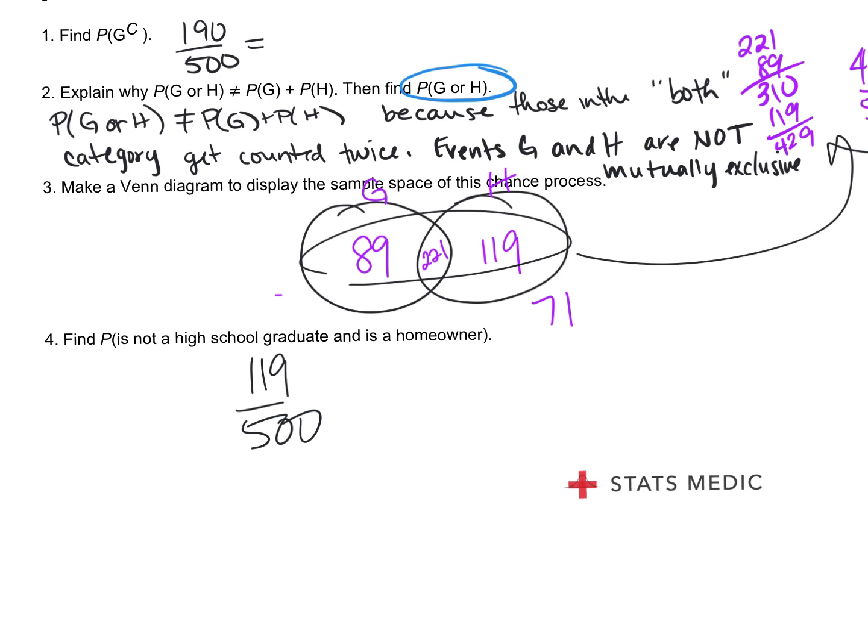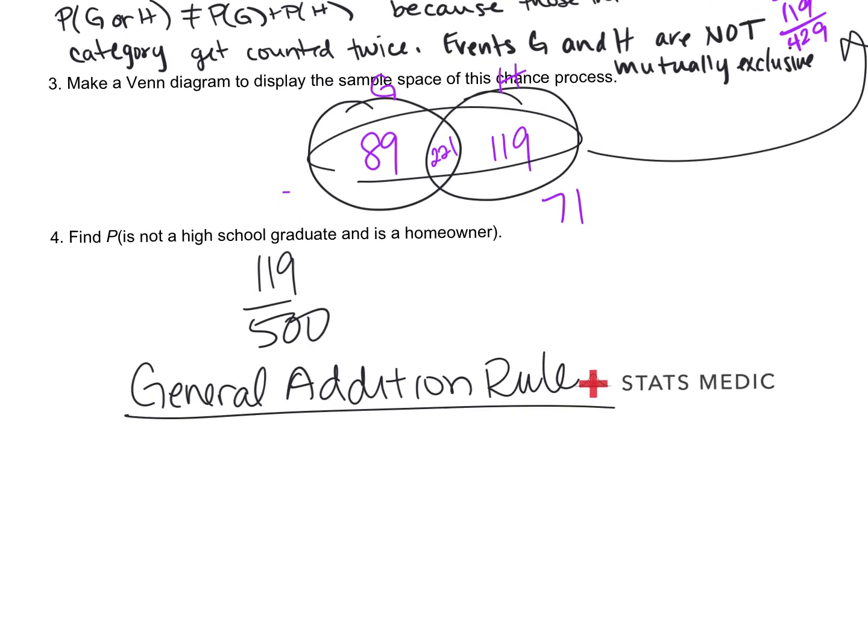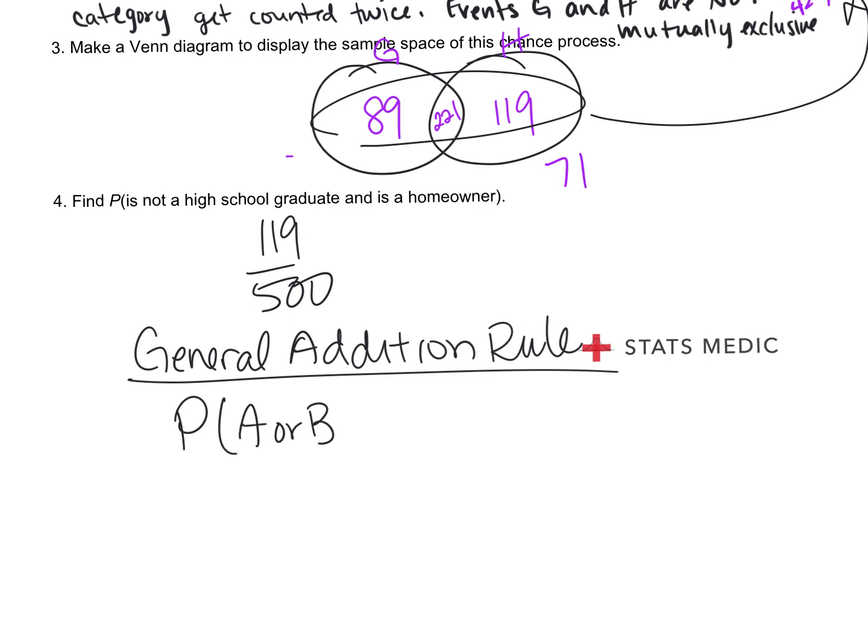Now, there is a formula that we can use to find these probabilities because remember yesterday we said we had counted that both group twice. So we had to subtract that off of the total and then we ended up with the correct answer for or. So this is our general addition rule. And as a rule, it's better to make the Venn diagram than it is to just memorize equations. To understand the Venn diagram and how to draw that and how to use that to get your probabilities is more useful than just memorizing some equations. But here's the equation. The probability of A or B is the probability of A plus the probability of B, but you have to subtract off the probability of A and B because that group got counted twice.